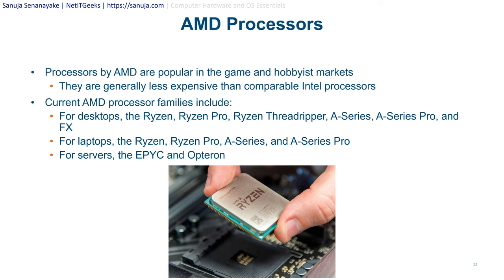Current AMD processor families include, for desktops: Ryzen, Ryzen Pro, Ryzen Threadripper, A-Series, A-Series Pro, and FX. For laptops: Ryzen, Ryzen Pro, A-Series, and A-Series Pro. For servers: AMD EPYC and Opteron. EPYC is one of the most commonly used AMD enterprise-grade server processors in 2022. Ryzen Pro and Threadripper are the most enthusiast-level desktop processors — suitable for high-demand workloads like AutoCAD or engineering applications.